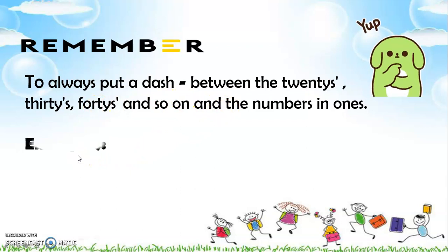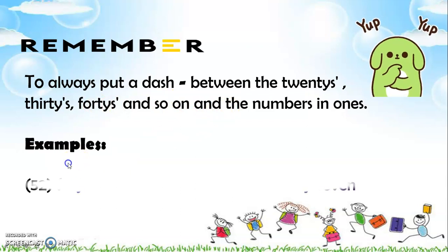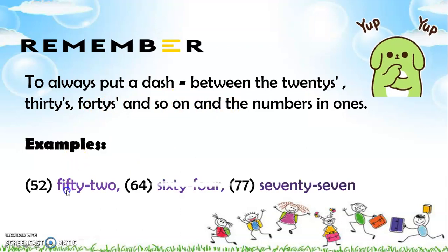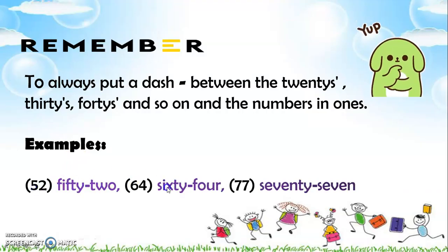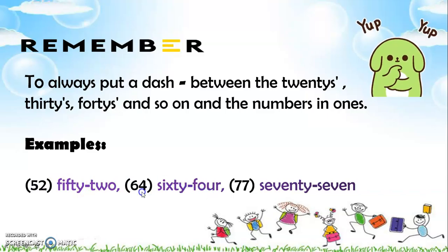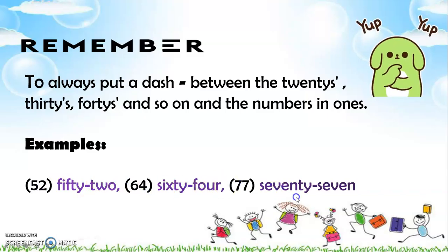The examples are like this: we have fifty-two — written as fifty dash two, but we read it as fifty-two. Then sixty dash four, read as sixty-four. And seventy dash seven, read as seventy-seven.